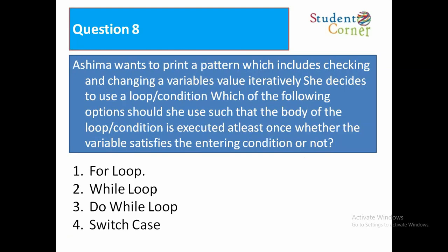Ashima wants to print a pattern which includes checking and changing a variable's value iteratively. She decides to use a loop or condition. Which of the following options should she use such that the body of the loop or condition is executed at least once whether the variable satisfies the entering condition or not? Option 1: for loop, option 2: while loop, option 3: do while loop, option 4: switch case. The answer is do while loop.